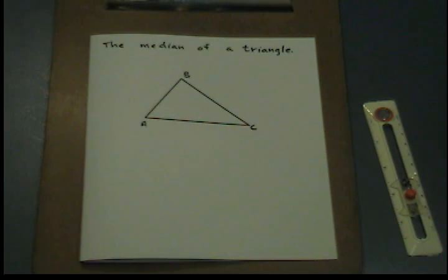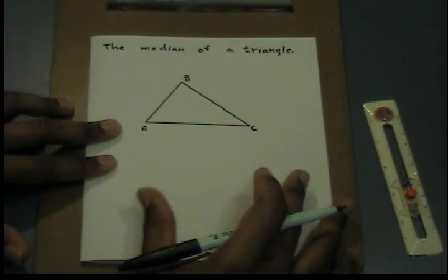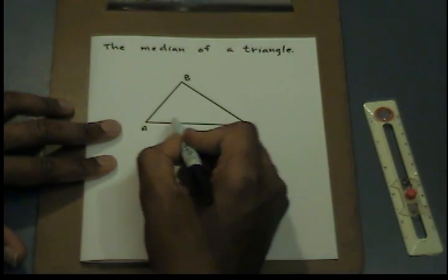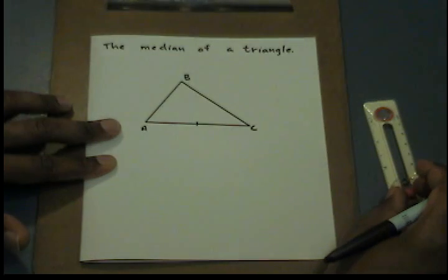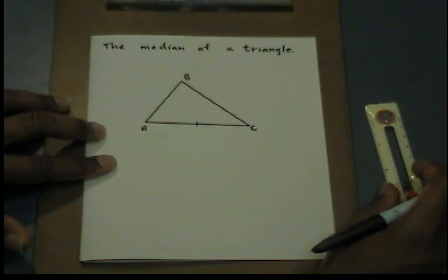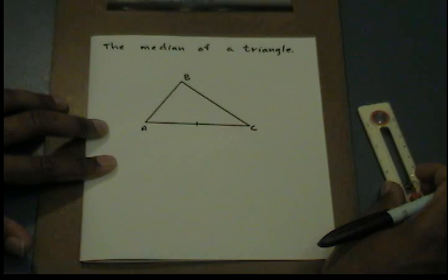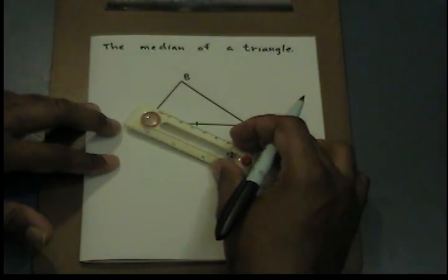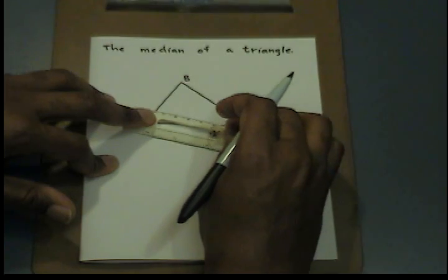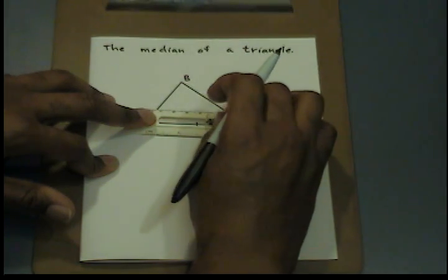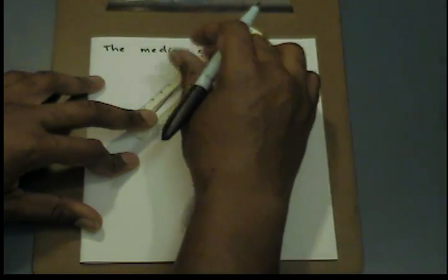Let's bisect AC. I'm going to place a tick mark near to where I think the center of segment AC is. I'm going to place the rotating end on point A and measure out a distance slightly greater than my tick mark. I'm going to create an arc that I know will intersect both from the top and bottom.